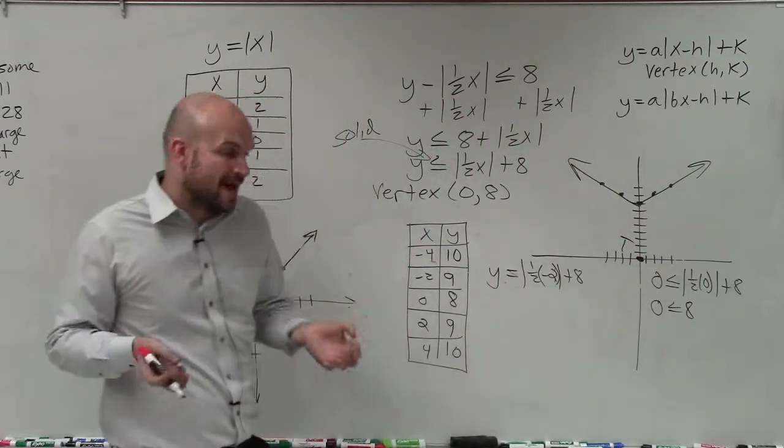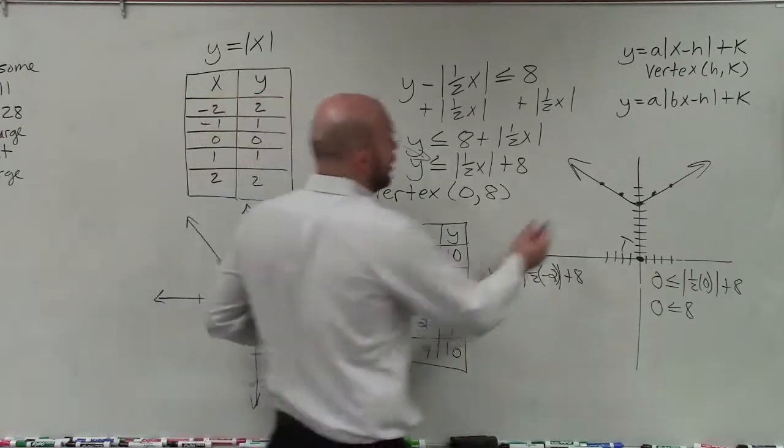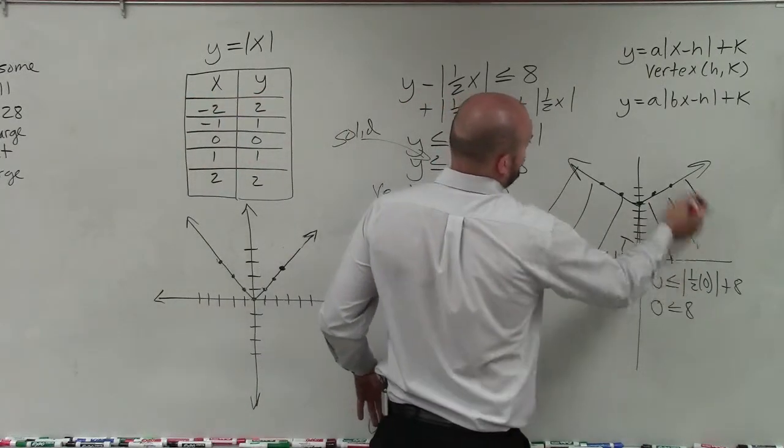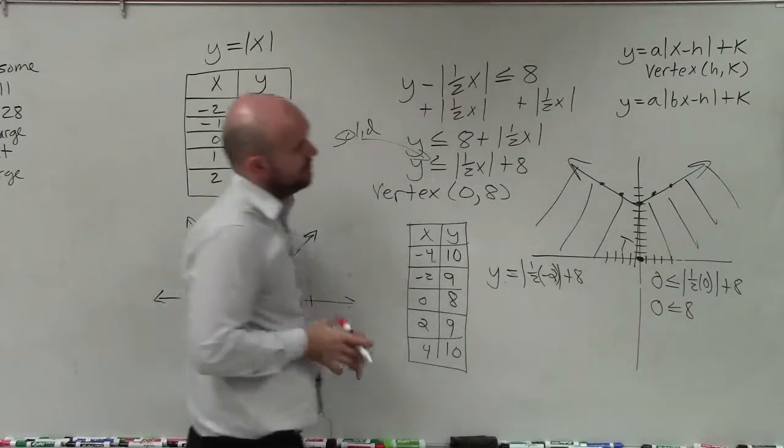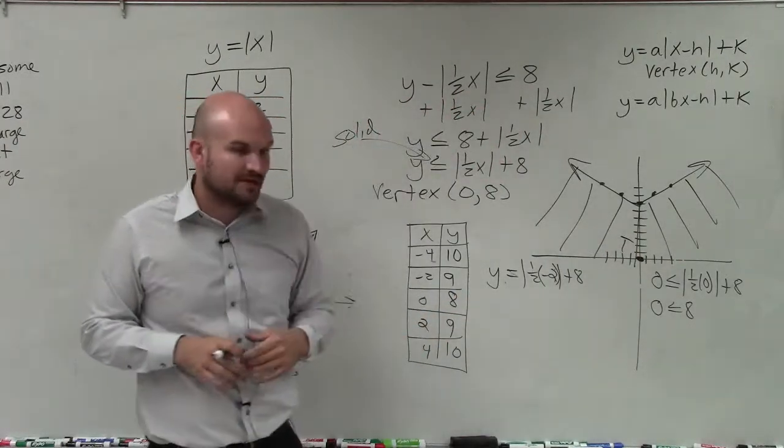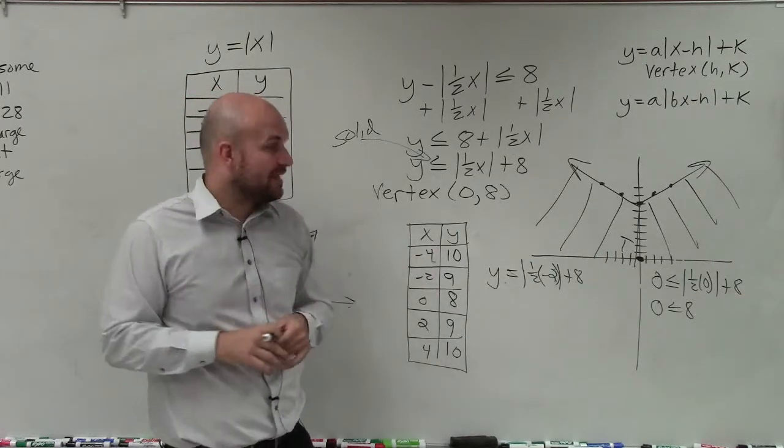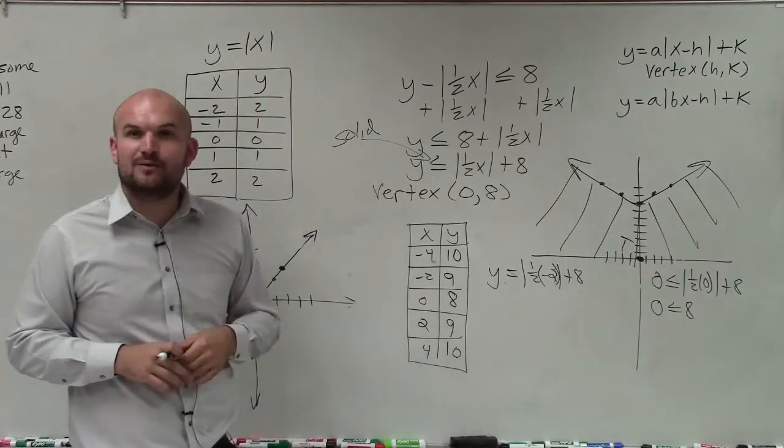Since the point outside or below the absolute value graph is true, that means all the points below are going to be true. And then you just go ahead and graph like that, and that means all the points inside or above your absolute value inequality are going to be false. So there you go, ladies and gentlemen. That is how you graph an absolute value inequality. Thanks.